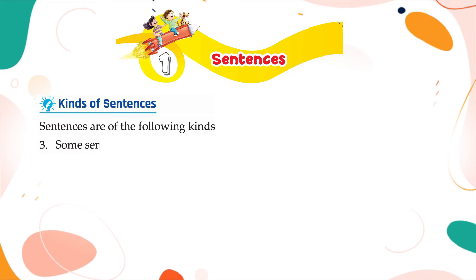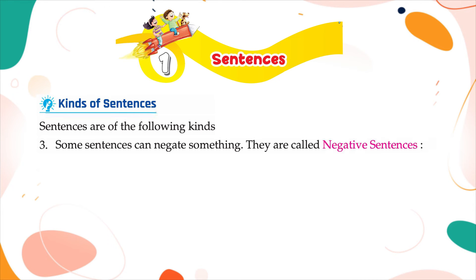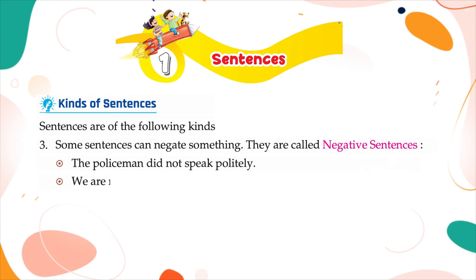Some sentences can negate something. They are called negative sentences. For example: 'The policeman did not speak politely.' 'We are not playing on the roof.'